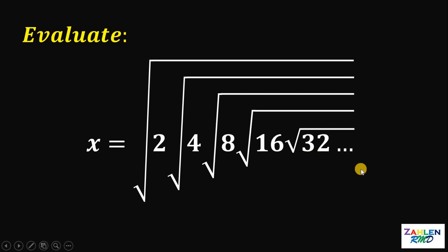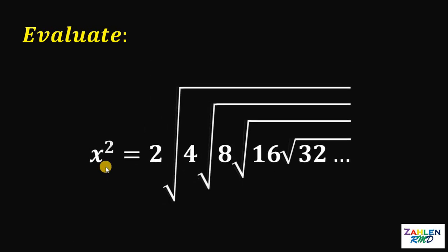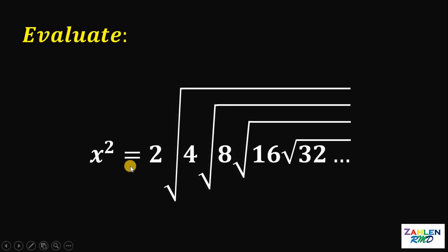Now let's square both sides. This will give us x squared equals 2 times square root of 4 times square root of 8 times square root of 16 times square root of 32, and so on and so forth.